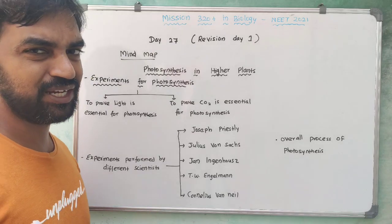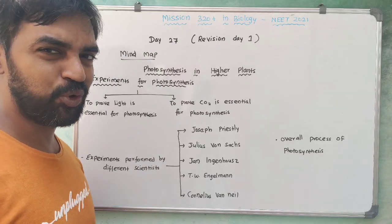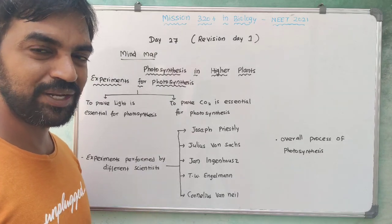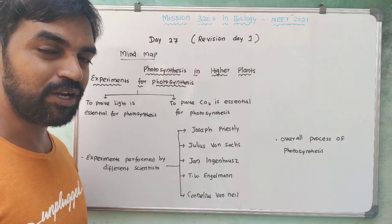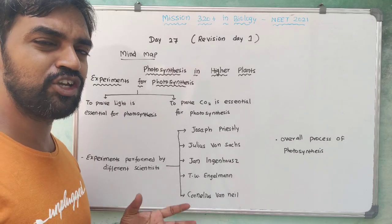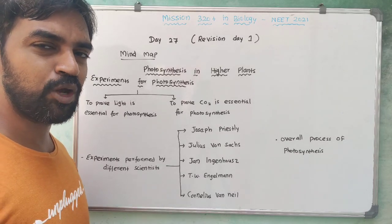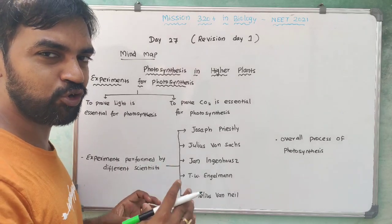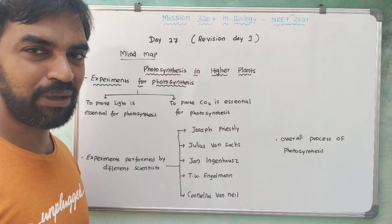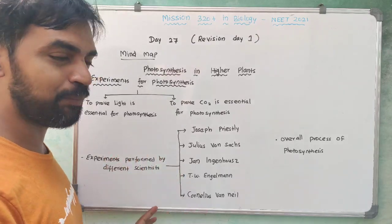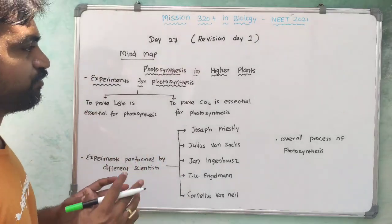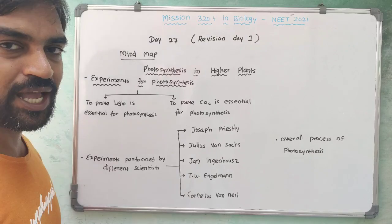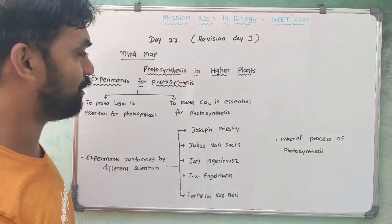Mind Map is a chapter with many topics and subtopics — that is a Mind Map. We will check all of that. For example, Photosynthesis in Higher Plants.